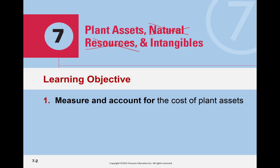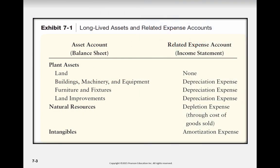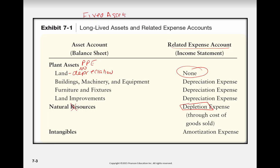Let's start with our first objective, which is to measure and account for the cost of assets. Here we have long-lived assets, also known as fixed assets. Plant assets we call property, plant, and equipment. Remember that land is not depreciable — there is no depreciation on land. Natural resources use an expense called depletion, but we are not covering that. For intangibles, the expense is known as amortization expense. This is a good synopsis of the various income statement accounts and their related balance sheet asset accounts.